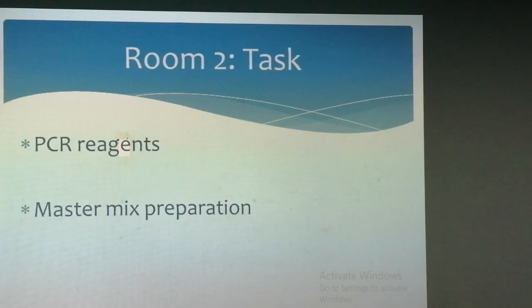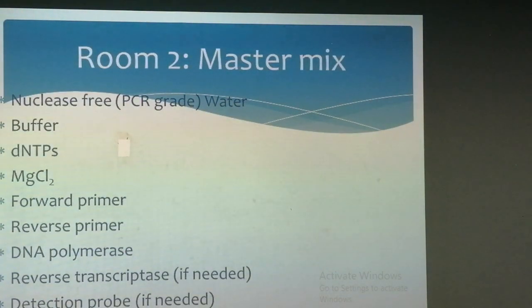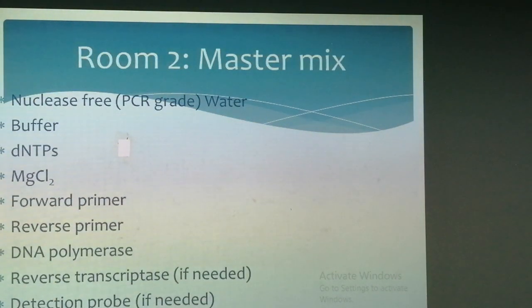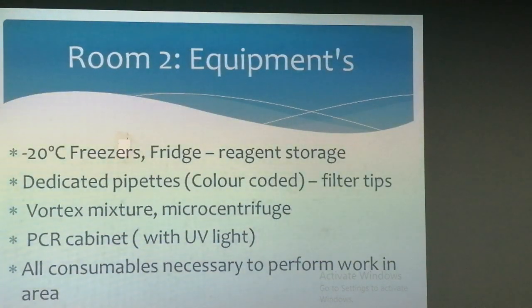Coming to room two — room two is for reagent and master mix preparation. For master mix preparation, the required components are nuclease-free water, buffer, deoxynucleotides, magnesium chloride, primer, DNA polymerase, reverse transcriptase for RT-PCR, and detection probe for real-time PCR. The list of equipment for room two includes: a minus 20 degree fridge, dedicated pipettes, vortex mixer, centrifuge, and a PCR cabinet as the working site. In this room there should be positive pressure.